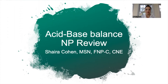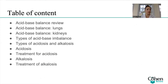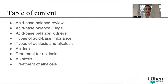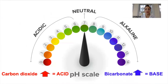We're going to go over acid-base balance review, the role of the lungs, the role of the kidneys, types of acid-base imbalance, types of acidosis and alkalosis, and their treatments. I've used a lot of colors in this lecture because I like to teach in a visual way, and I think colors will really help you distinguish between these two concepts.